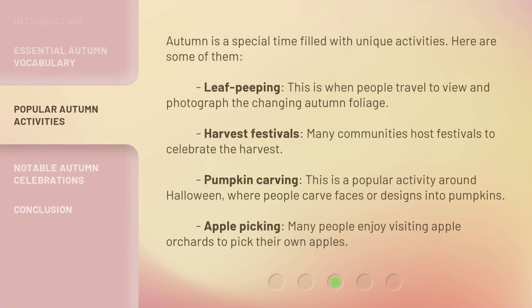Autumn is a special time filled with unique activities. Here are some of them. Leaf peeping — this is when people travel to view and photograph the changing autumn foliage. Harvest festivals — many communities host festivals to celebrate the harvest. Pumpkin carving — a popular activity around Halloween, where people carve faces or designs into pumpkins. Apple picking — many people enjoy visiting apple orchards to pick their own apples.